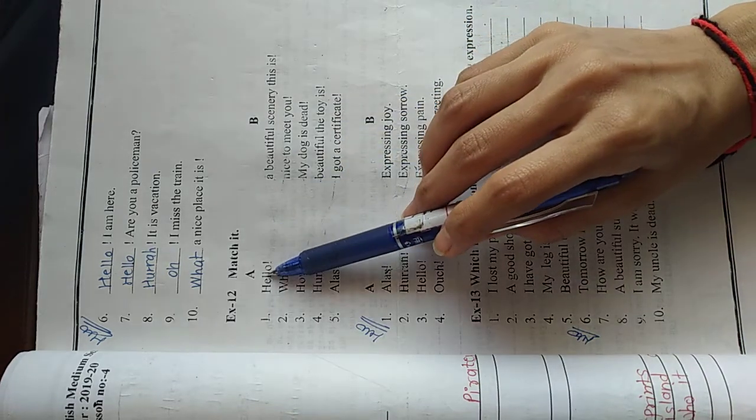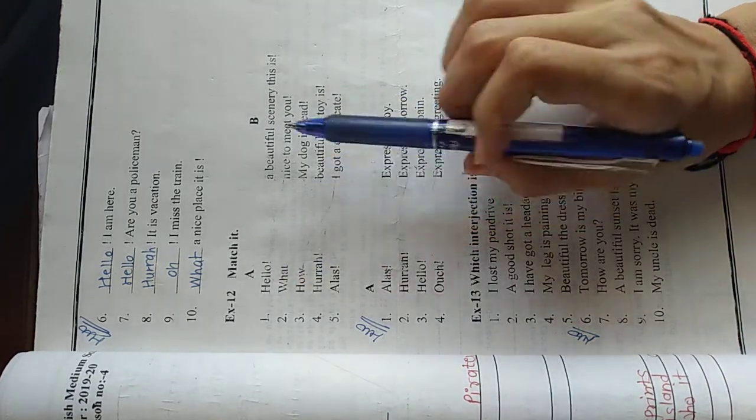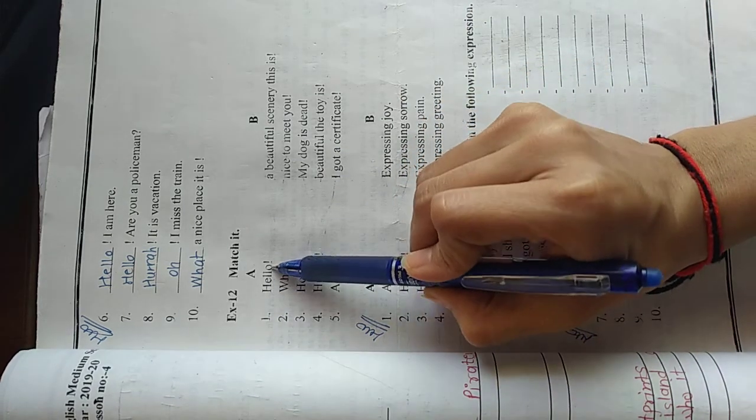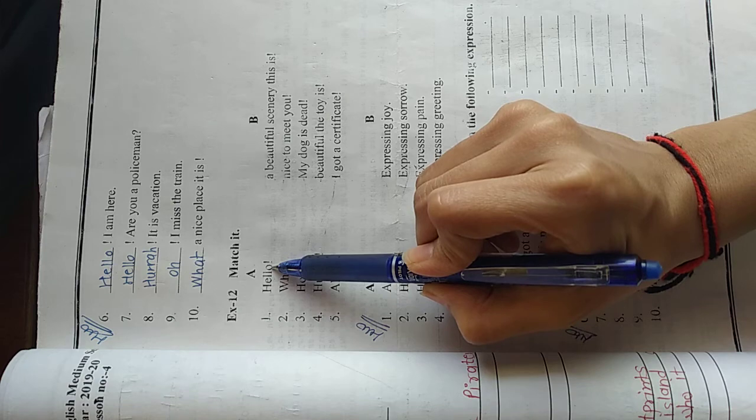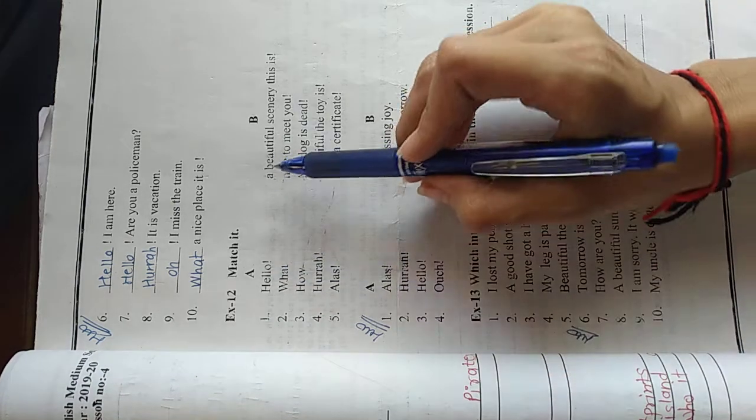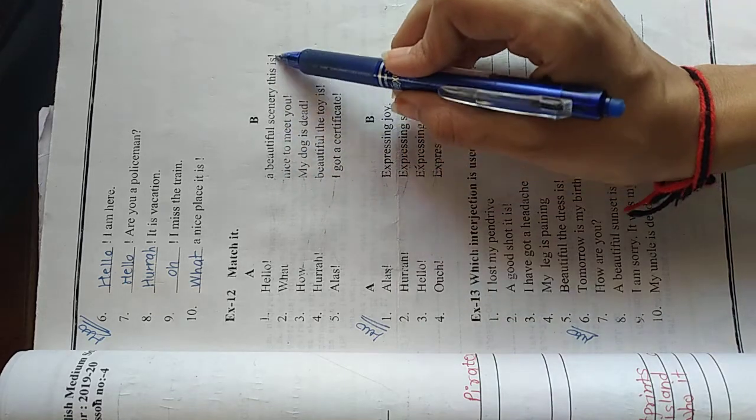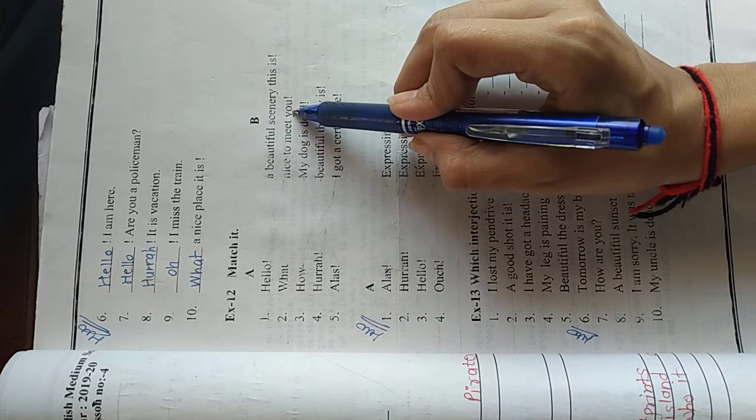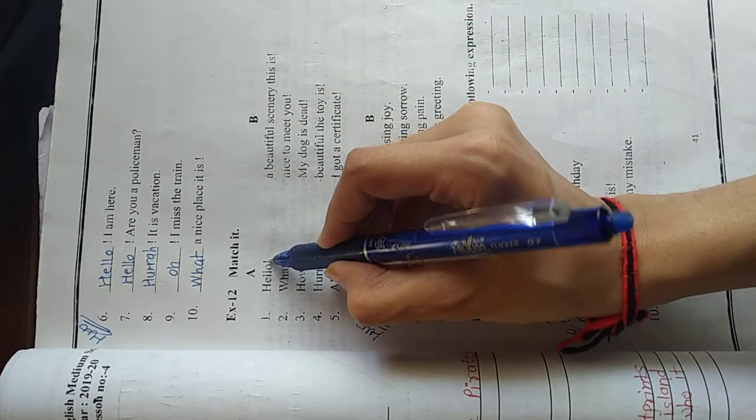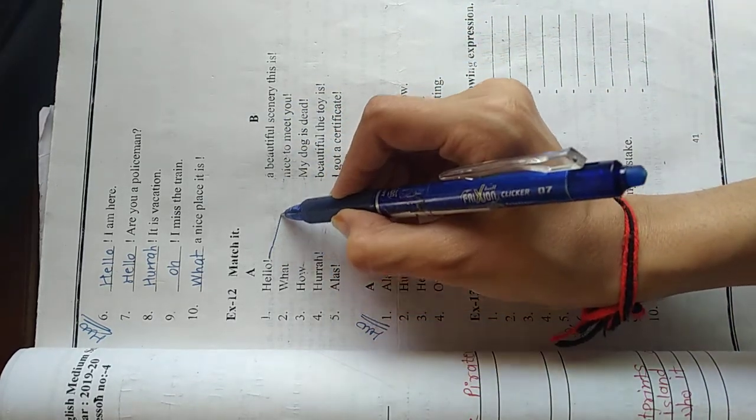Now you have to match correct interjection with sentence. First is hello. So with hello what we use, it is an introducing interjection. Now see the sentence. A beautiful scenery this is. No. Nice to meet you. This is correct. So now match hello with nice to meet you.